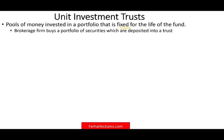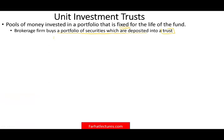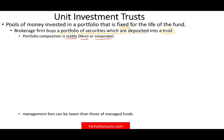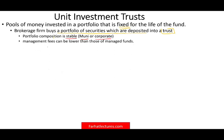A brokerage firm — basically called a sponsor — will buy a portfolio of securities, which are deposited in a trust. Investors then buy shares of that trust. The portfolio composition is stable; once established, it is not actively managed. For example, they might hold municipal bonds or corporate bonds, but the composition stays stable. Because of that, management fees can be lower — you are not constantly managing the fund.